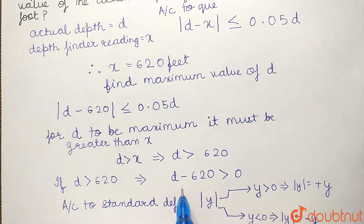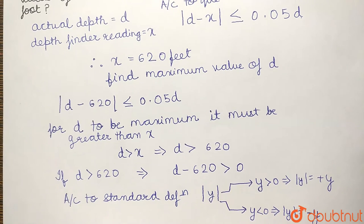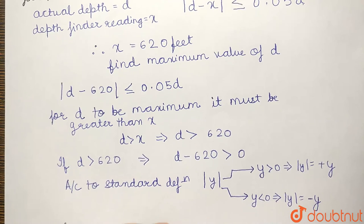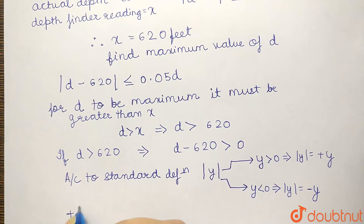Now, according to our question, for D to be maximum, it must be greater than 620. Therefore, D minus 620 is greater than 0. Therefore, this modulus will open with a positive sign. Therefore, we can say, plus D minus 620 should be less than equal to 0.05D.